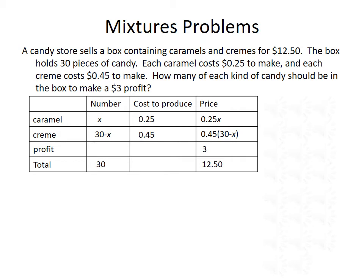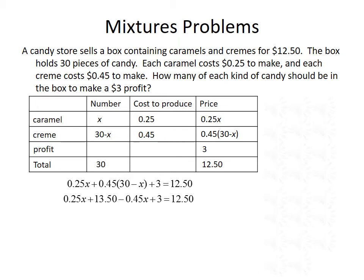Now that we've filled out our table, we should be able to set up an equation to solve. If the total price is $12.50, and we add together the three blocks above that, they should equal $12.50. So our equation is 0.25X plus 0.45 times 30 minus X plus 3 equals $12.50. We'll start by distributing 0.45 through the parentheses, giving us 0.25X plus 13.5 minus 0.45X plus 3 equals 12.50. Combining like terms gives us negative 0.2X plus 16.50 equals 12.50.